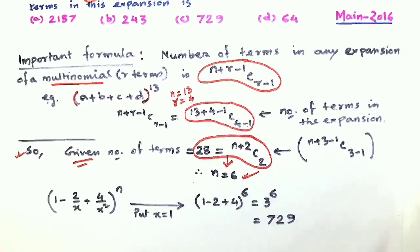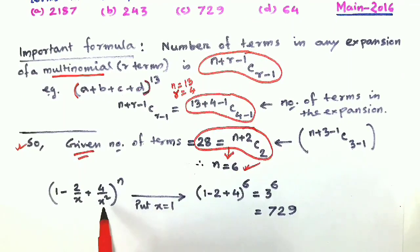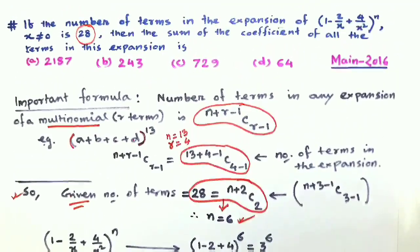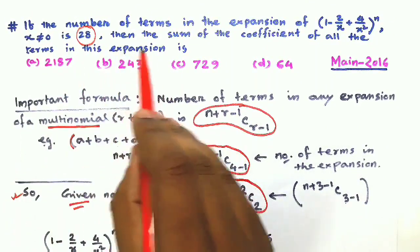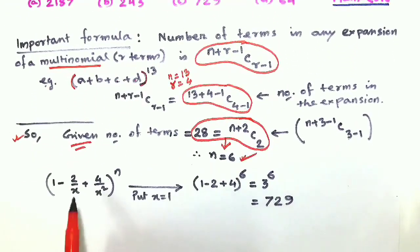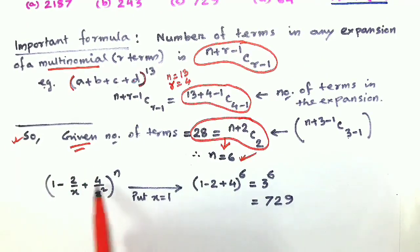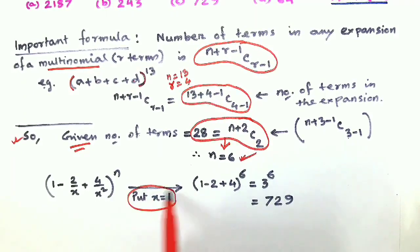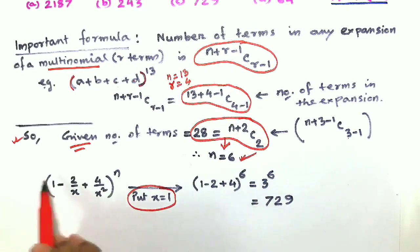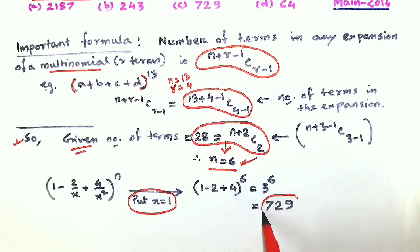So our expansion is (1 - 2/x + 4/x²)ⁿ with n equal to 6. To find the sum of the coefficients of all the terms in the expansion, we put x equal to 1. This gives 1 - 2/1 + 4/1² all to the power 6, which is (1 - 2 + 4)⁶ = 3⁶ = 729.